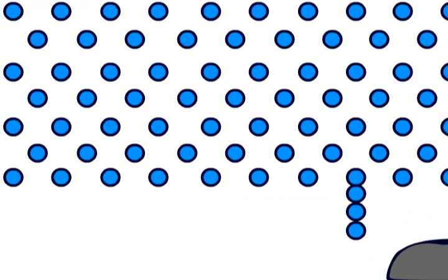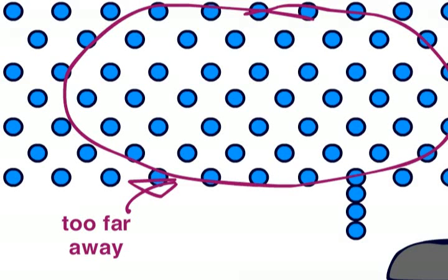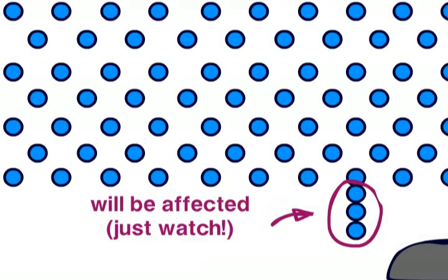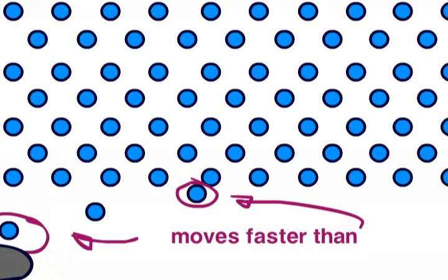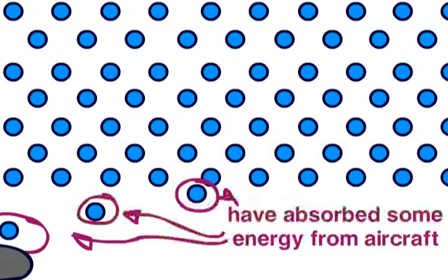Here is the skin of the aircraft, and here are a load of air particles. These air particles are too far away to be affected by the aircraft, but these three will be. In this very slowed down film, you can see that as the aircraft moves through the air, air particles close to the skin are absorbing some energy from the aircraft and are accelerating to the aircraft's speed. Air particles close to the aircraft move closer to the same speed than those that are further away. This absorption of energy by trillions of air particles is what causes skin friction drag.